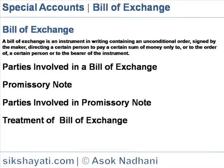Parties Involved in a Bill of Exchange: Generally, there are three parties to a Bill of Exchange. One, the Drawer — the person who draws the bill. Two, the Drawee — the person who accepts the order. Three, the Payee — the person to whom the amount has to be paid. Sometimes the Drawer and the Payee can be the same person, in which case there are only two parties in the Bill of Exchange.